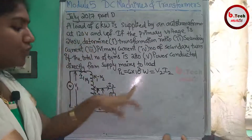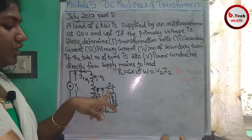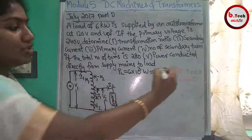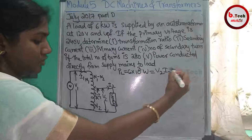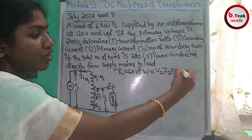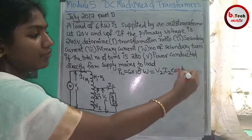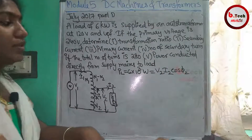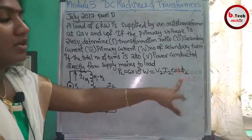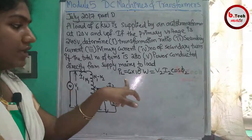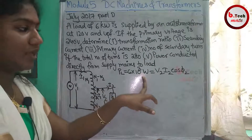V2 is 120V. The power equation is V2 × I2 × cos(φ2), and this equals 6,000 Watts.